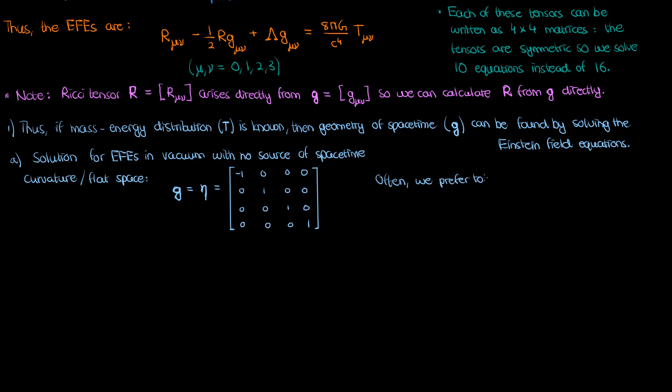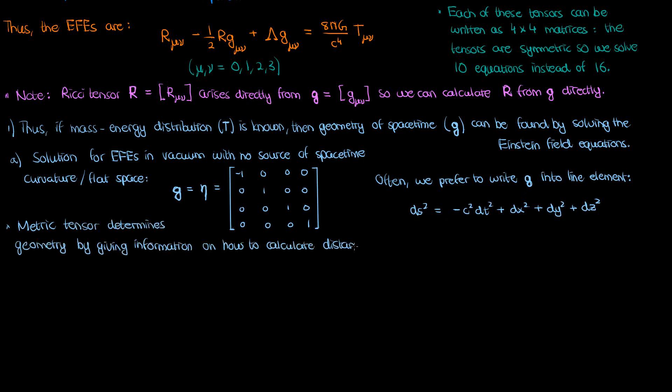Oftentimes, though, instead of writing the metric tensor solution in the form of a matrix, we just incorporate the metric tensor components into our infinitesimal line element, which would look like this for Minkowski space. And this is how the metric tensor determines the geometry of your spacetime surface. It gives you information on how to calculate distances between points. In this case, the metric tensor gave you information on how to calculate distances between really close-by events in flat space. Take c squared times the negative squared of the time separation dt, and add the sum of squares of the spatial separation dx dy and dz.